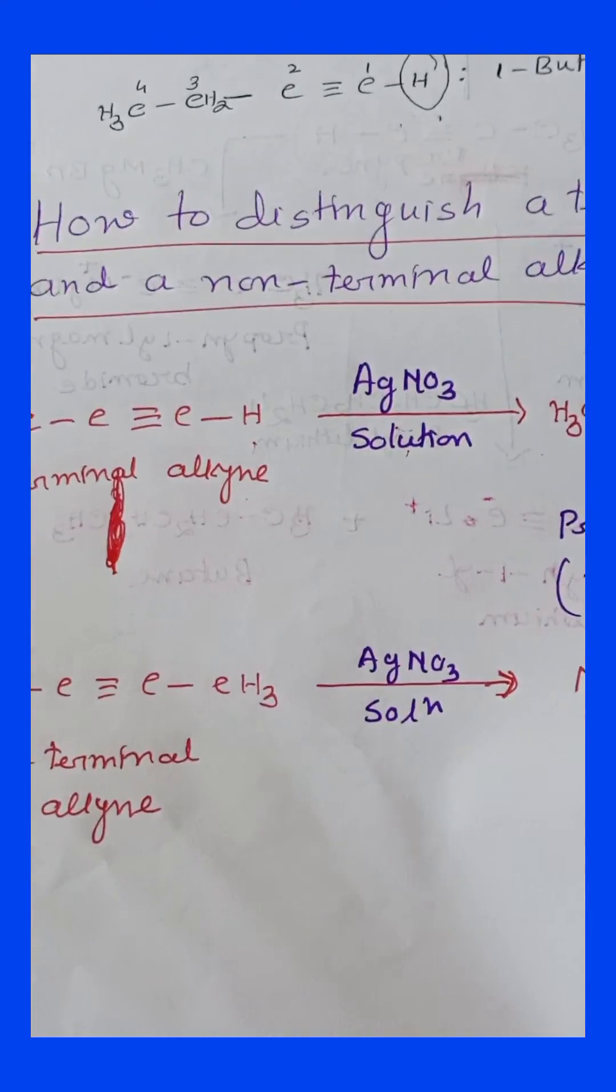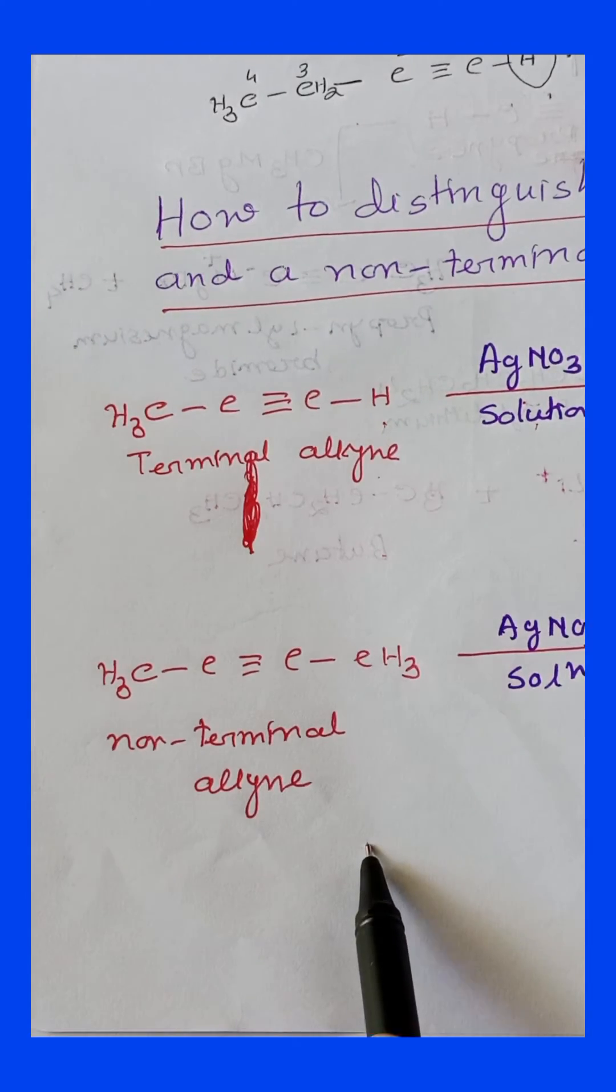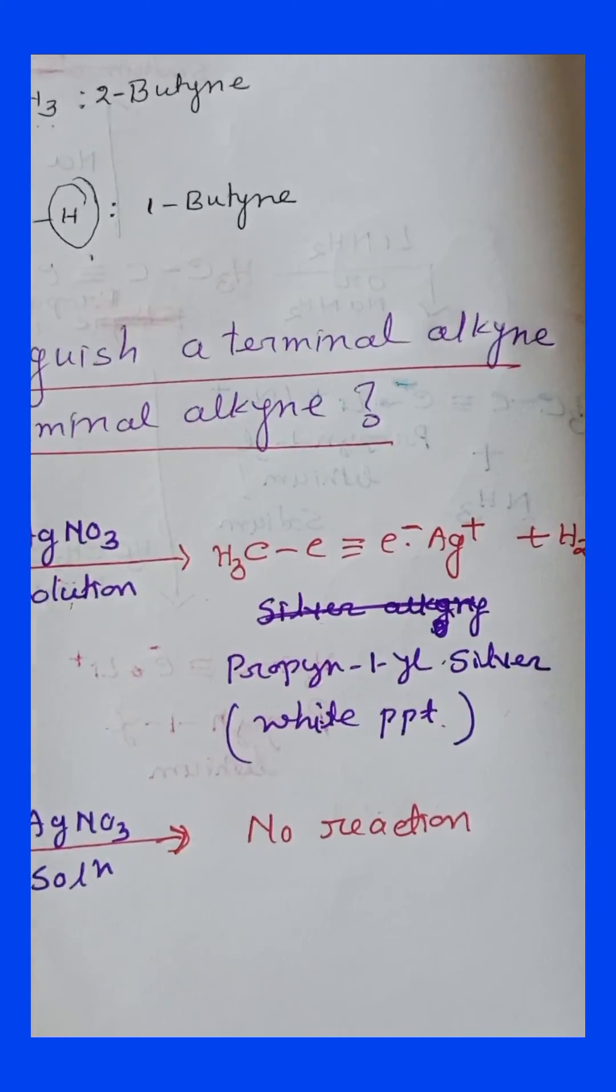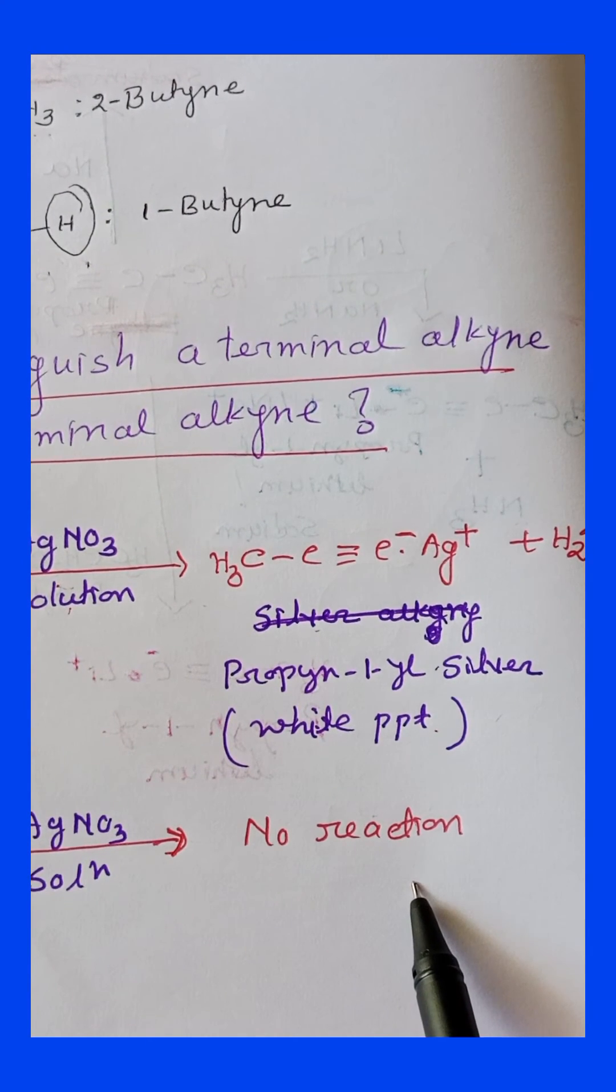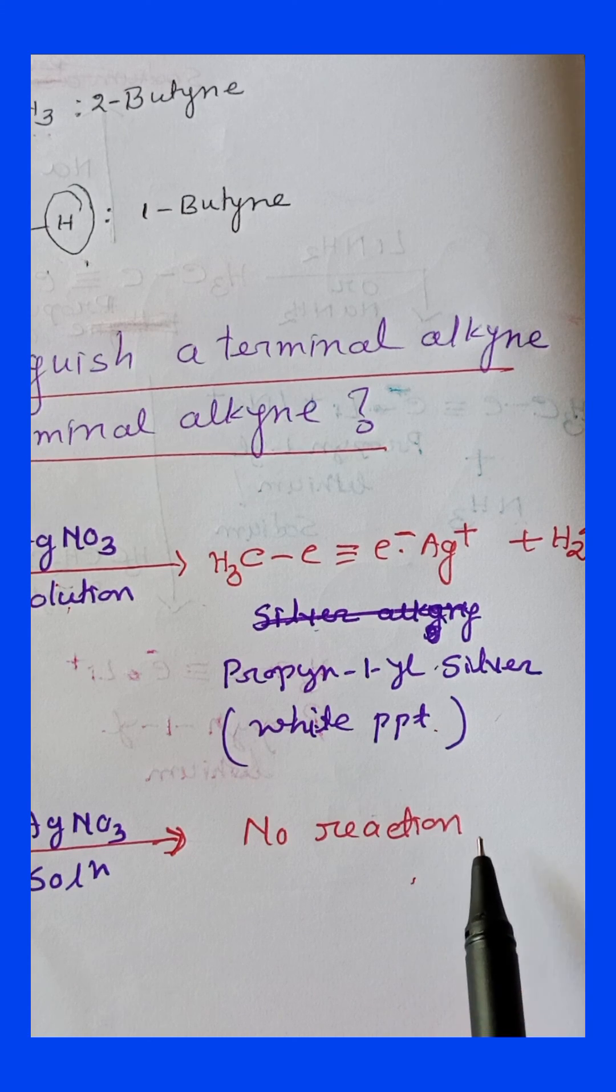But when we perform the same reaction with the non-terminal alkyne, since there is no acidic proton present, we can't see any white precipitate. So this is the way we can distinguish between terminal alkyne and non-terminal alkyne.